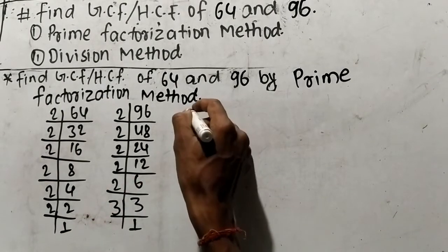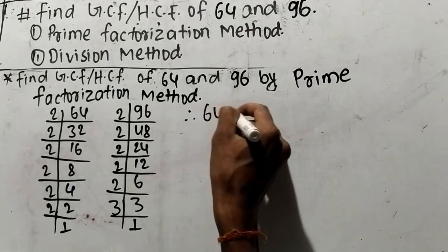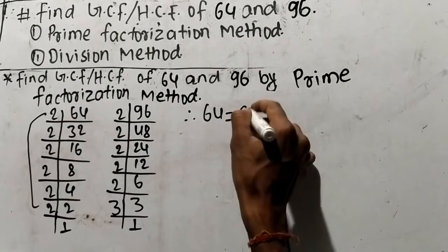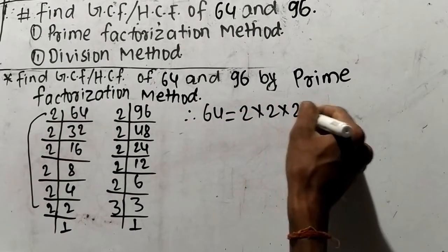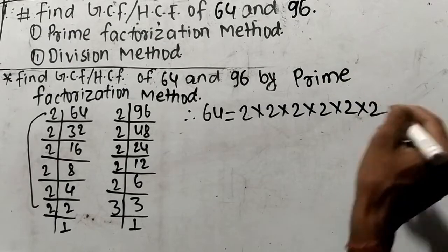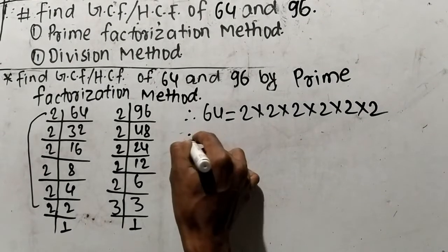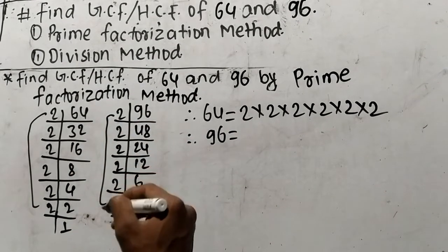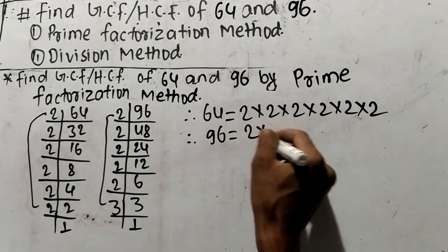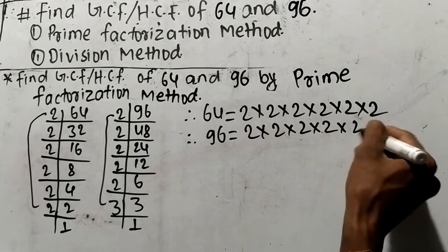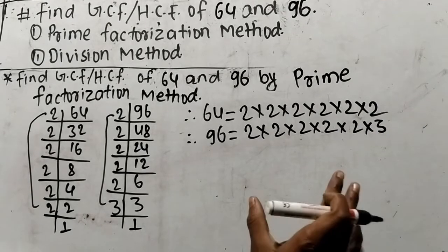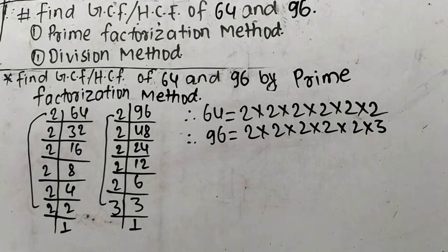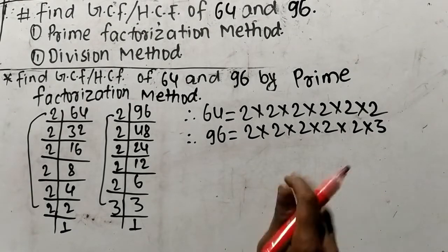From these prime factors, we can write that 64 is equal to 2 multiplied six times, and 96 is equal to 2 multiplied five times and 3. So as you look here, we have taken out the prime factors of 64 and 96, and now we find out the common factors in these prime factors.